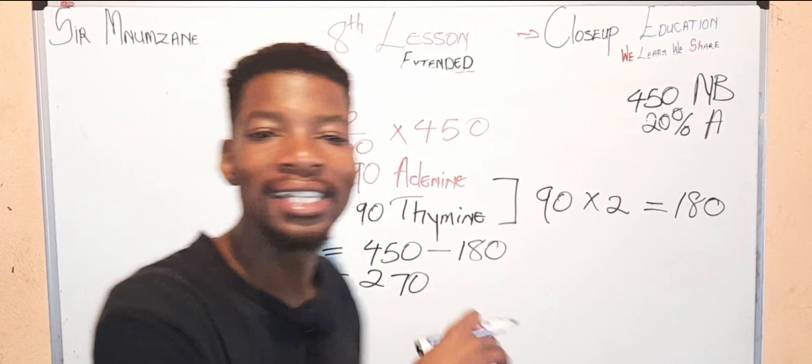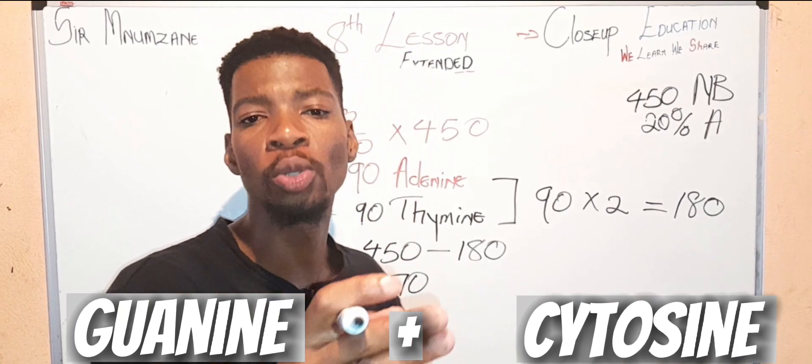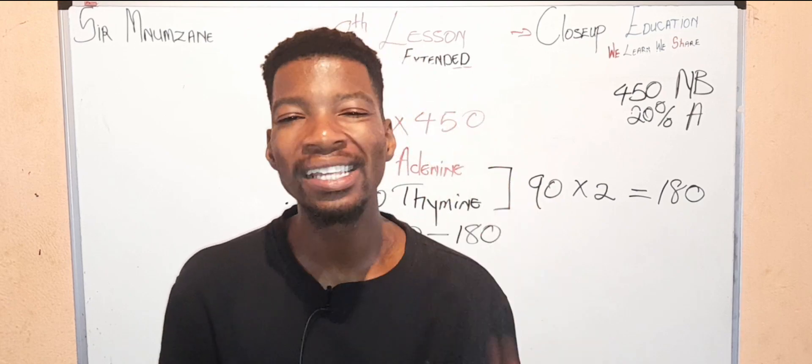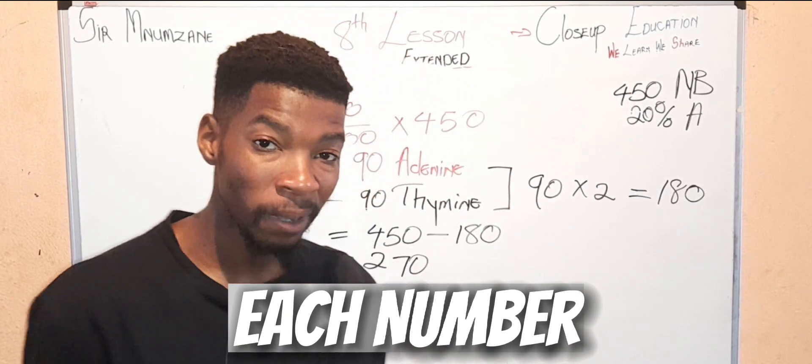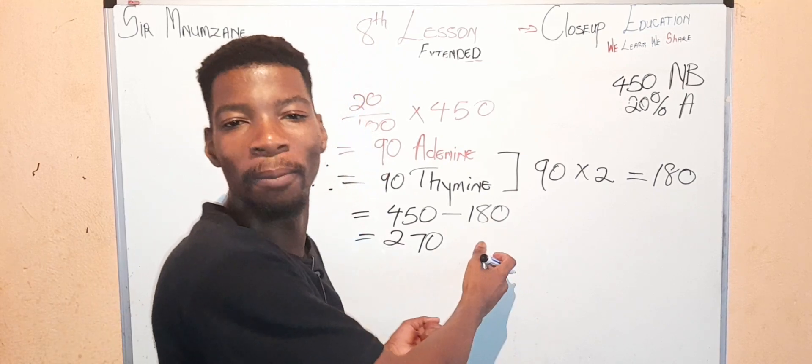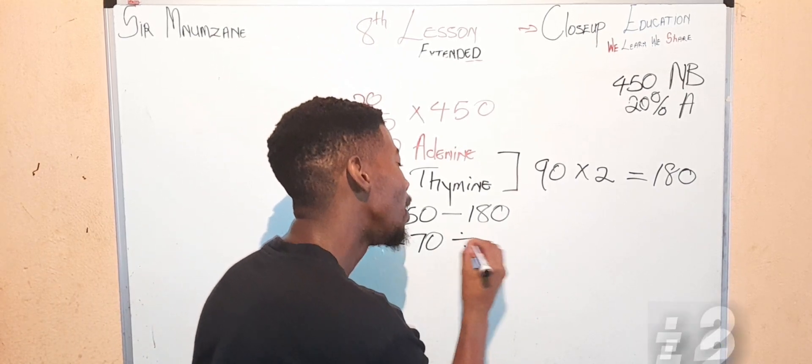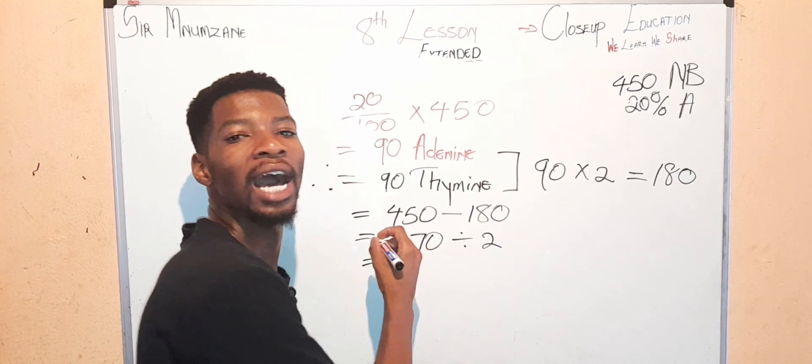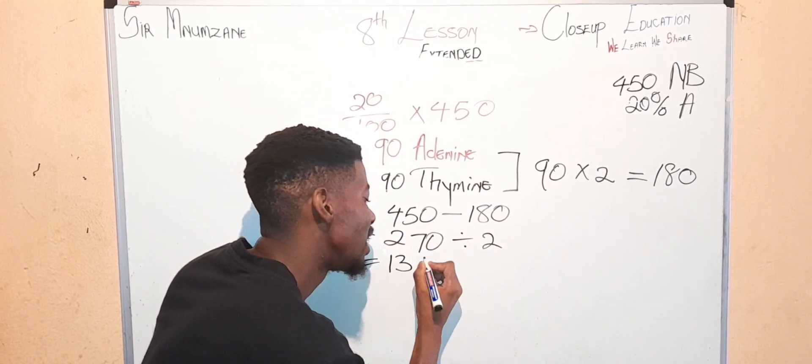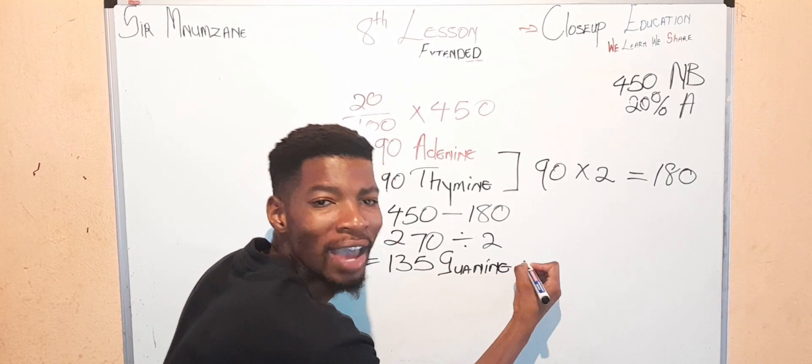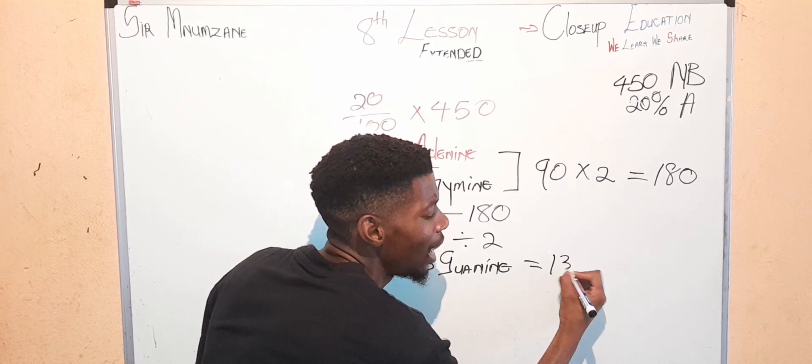Now we know that 270 is for both guanine and cytosine, but wait, what does the question say? The question said determine each nitrogenous bases. So to find each, we have to do the simplest part here, which is to divide by two. When we divide by two, we are finding 135 guanine and 135 cytosine.